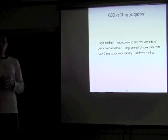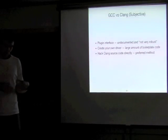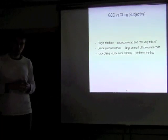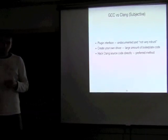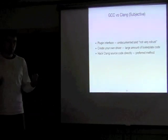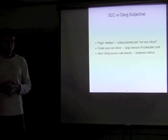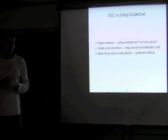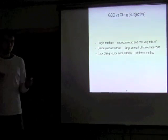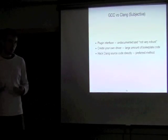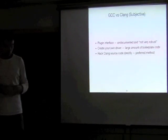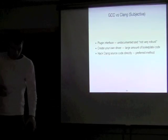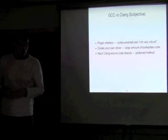This leaves two options for creating tools based on Clang: creating your own compiler driver, which requires a large amount of boilerplate code, or modifying the Clang source code directly — taking the code and changing it for your needs. The last method appears to be the preferred way of doing things, but that's problematic: if you're going to build a tool and Clang is changing underneath you over time, you'll have to manually merge updates into your fork of the source.